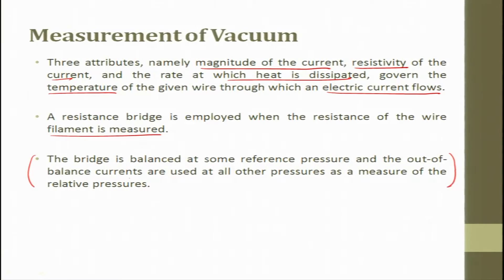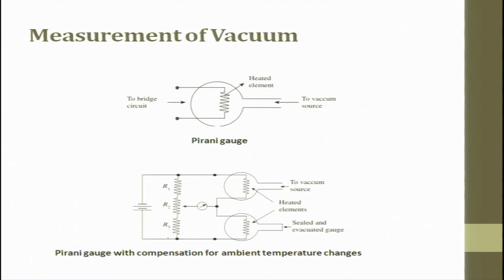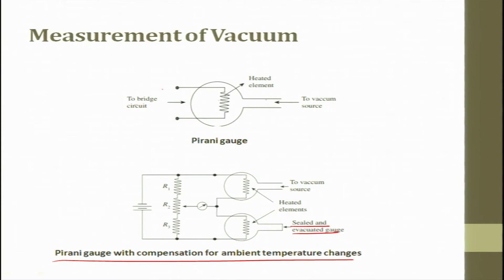The bridge is balanced at some reference pressure and the out-of-balance currents are used at all other pressures as the measurement of relative pressures. In a Pirani gauge, a vacuum source is there, a bridge circuit is there, and this is the filament which is heated. You apply constant heat and try to measure the voltage. The Pirani gauge with compensation for ambient temperature change has a heated element whose output is attached to a voltmeter and then to another heated element in a sealed evacuated gauge with resistance and applied voltage.